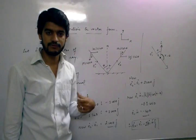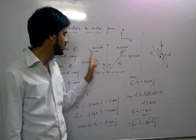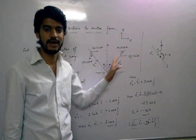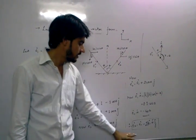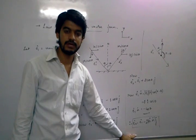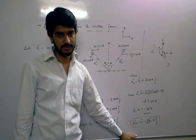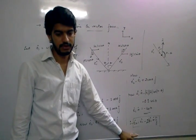If you are asked to find the relation between the incident ray, reflected ray, and normal in vector form, then this is the required relation.